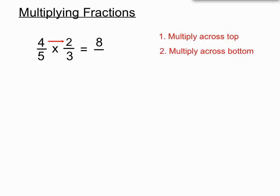Second bit is multiply across the bottom. 5 times 3 is 15. And we just have to check if we can simplify that.